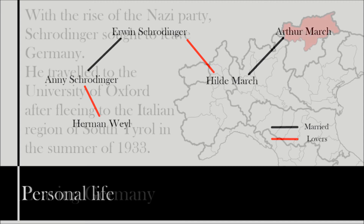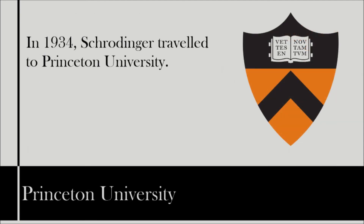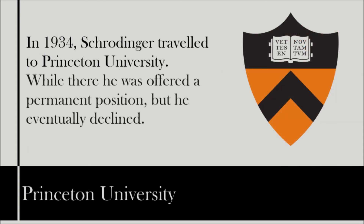Many scientists fleeing Germany spent the summer of 1933 in the Italian region of South Tyrol, and here Hilda became pregnant with Schrödinger's child, before she and the Schrödinger's moved on to Oxford. In early 1934, he was invited by Princeton to lecture there, and while there, offered a permanent position. While he negotiated salary and conditions, in the end he did not accept, likely due to the unacceptability of the complex relationship between Schrödinger, Annie and Hilda.